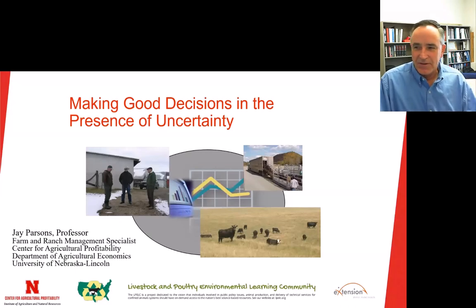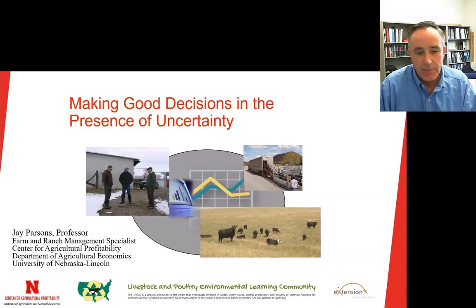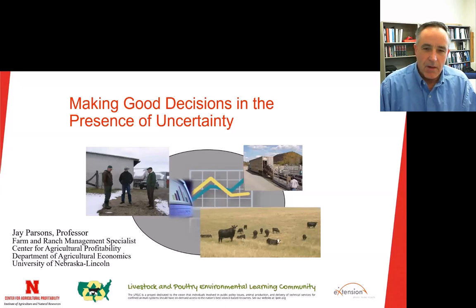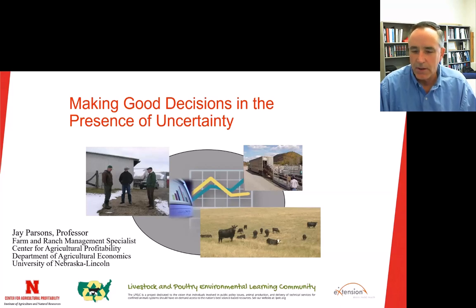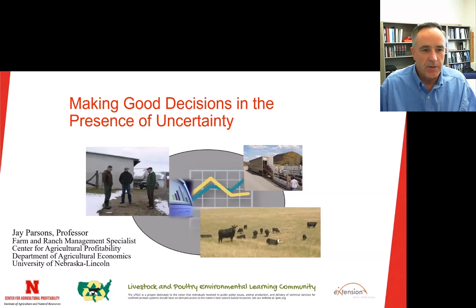My topic is making good decisions in the presence of uncertainty. By way of background, I'm an agricultural economist at the University of Nebraska Lincoln. For the last 20-25 years I've been involved with national groups on decision making, in particular the Decision Analysis Society and the Society for Decision Professionals — high-powered people consulting with Fortune 500 companies. When I tell them I work in agriculture, they largely shake their head because of the presence of uncertainty we deal with in agriculture.